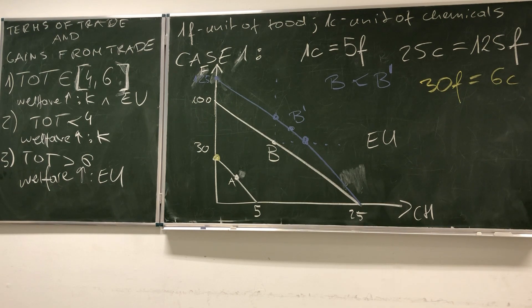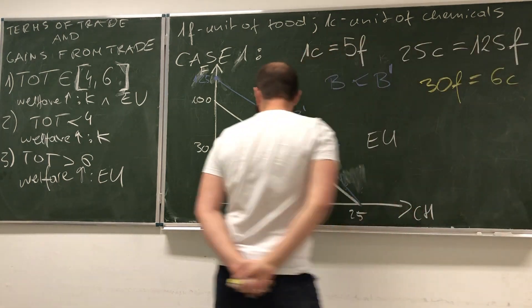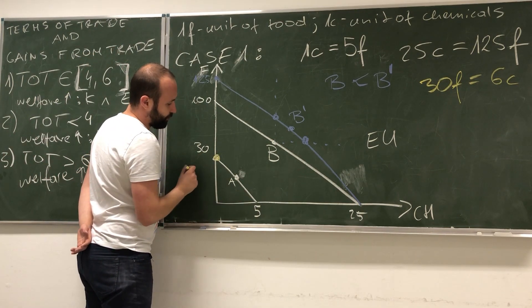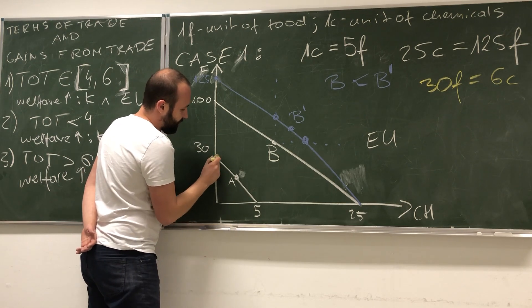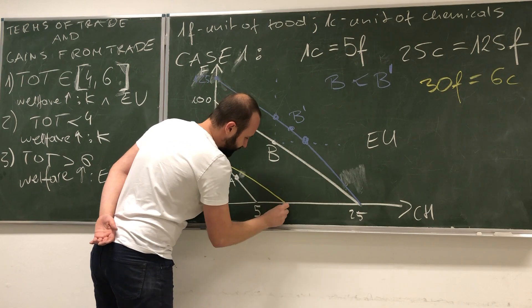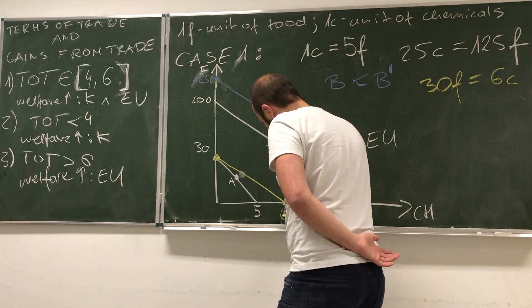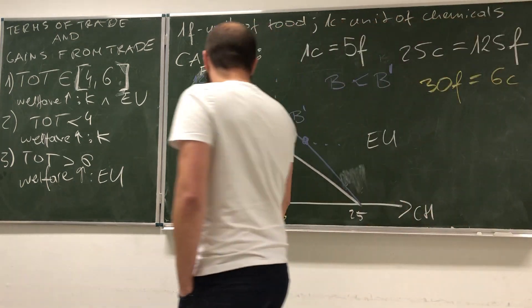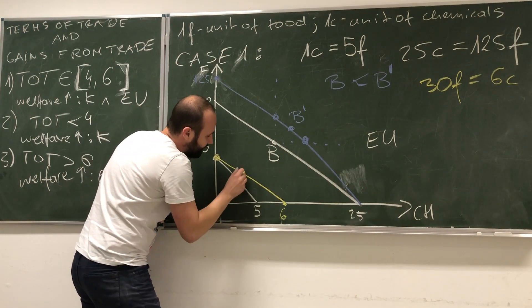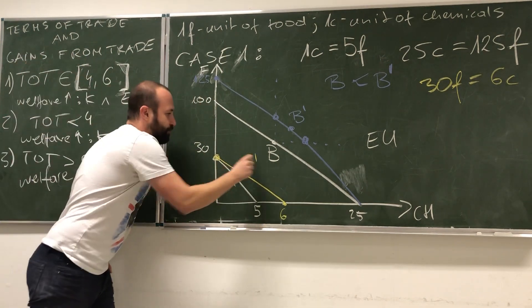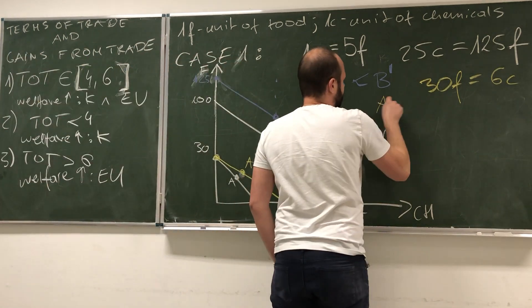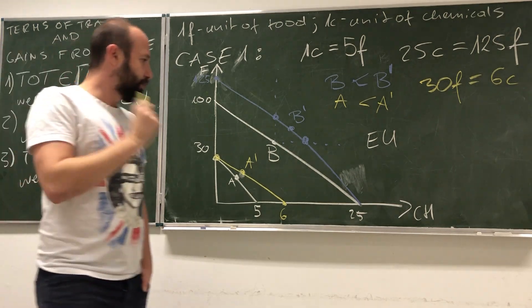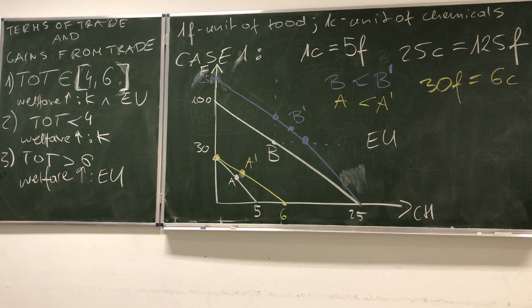One unit of chemical is worth 5 units of food. What will happen here is that this old production possibility frontier pivots around 30 and we are getting a new line over here. Again we see that we can easily choose a point like A prime that will be preferred to the point A because the customers in Kenya will now have more of both goods.